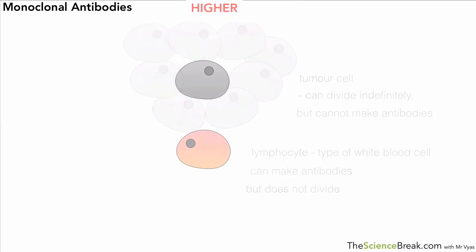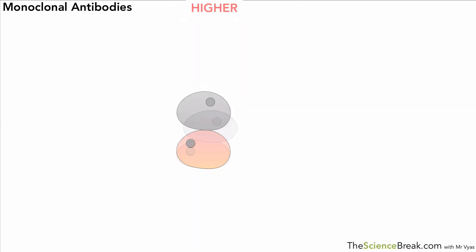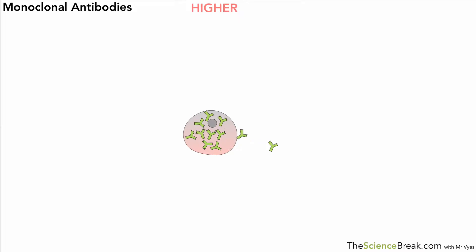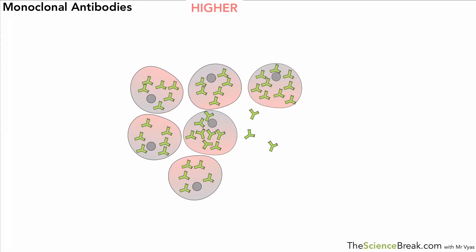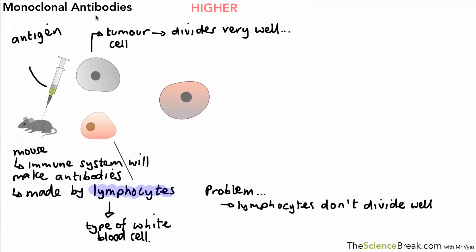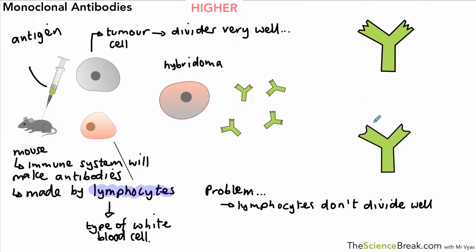It makes sense to combine these two together, which we can do — they are fused together, sometimes using a little electricity to encourage the process. We end up with a new type of cell called a hybridoma cell. This hybridoma cell can produce the antibody that we want and can also divide. It secretes the antibodies, divides to make many copies of itself, and each copy will also make the antibodies we want. We can then collect those antibodies, purify them, and use them.